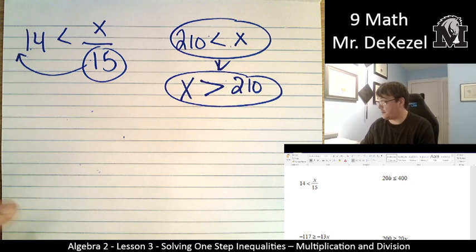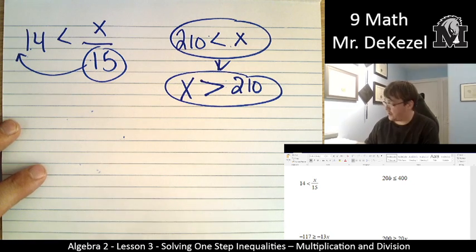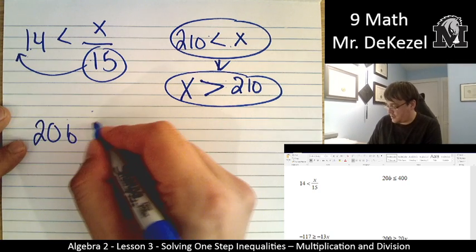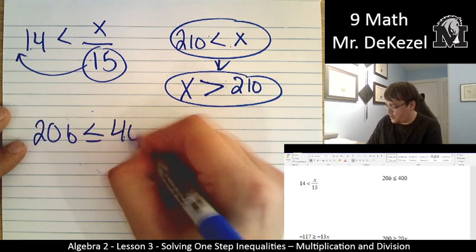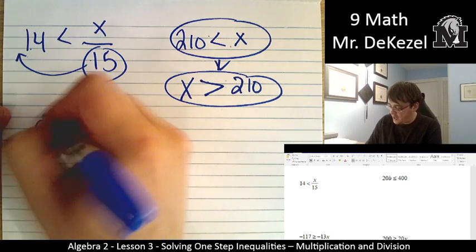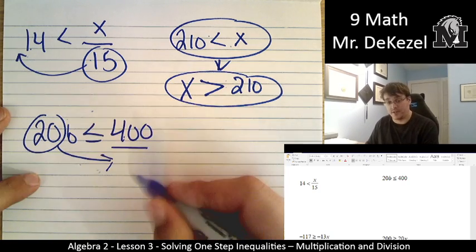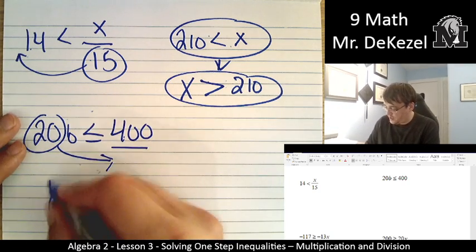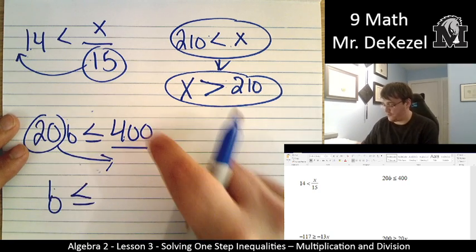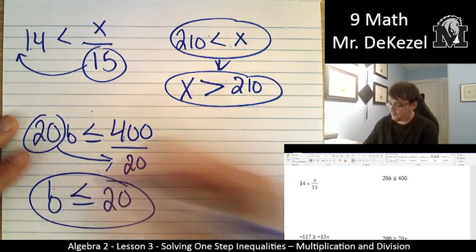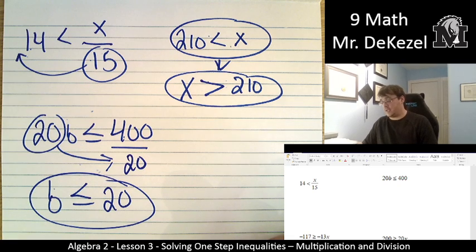Don't let me forget because I'm not allowing you to forget either. Our next one is 20b is less than or equal to 400. We divide that side by 20 because it's on the top over here. It goes on the bottom over here. So b is less than or equal to 400 divided by 20 is 20. Variables on that side, we didn't divide by a negative, so we're okay.